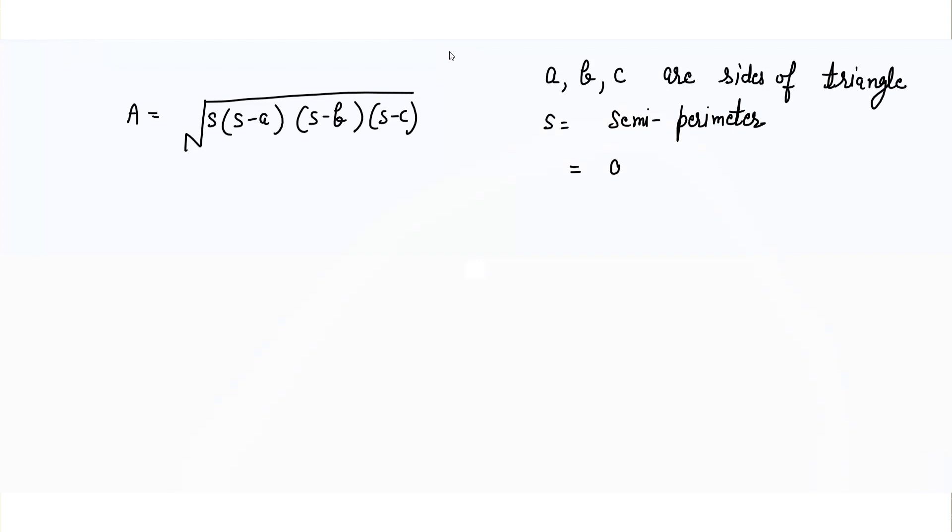Semi-perimeter equals a plus b plus c. It's the perimeter of a triangle where we add all the side lengths, but when it comes to semi-perimeter, we divide it by two. So s equals a plus b plus c divided by two. Let's take an example and apply the formula.